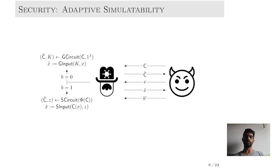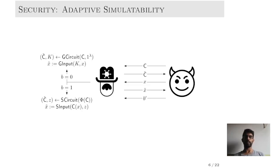The advantage of the adversary is defined as the probability with which he guesses correctly bounded away from half. The source of adaptivity in this game is the ability of the adversary to pick X after having seen the garbling of the circuit C tilde. In the selective version, the adversary would have to output both the circuit and the input together. Adaptivity is important in some applications like one-time programs.